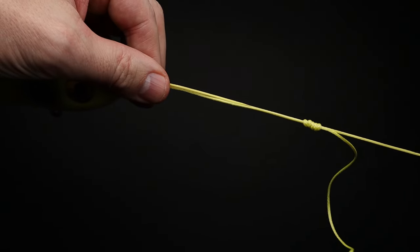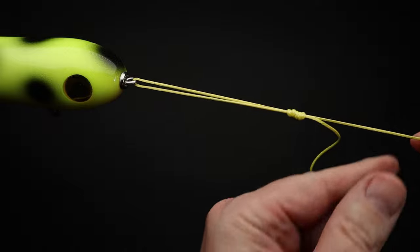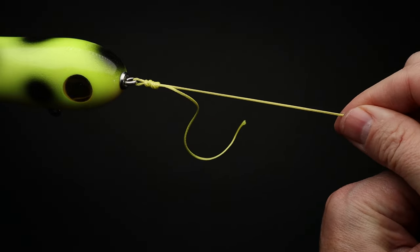Now let go of the end of the line and pull on the main line until the knot reaches the eye of your hook or lure.